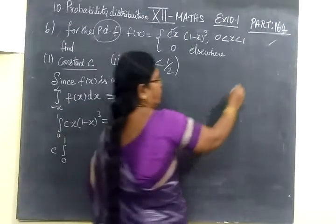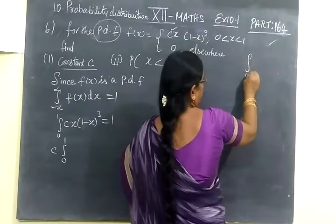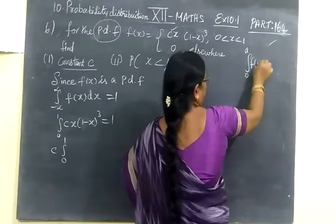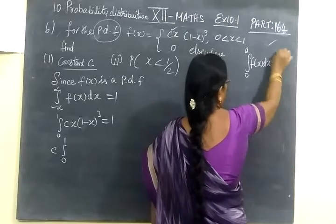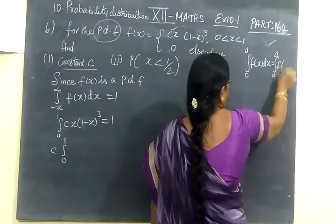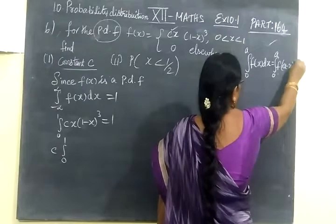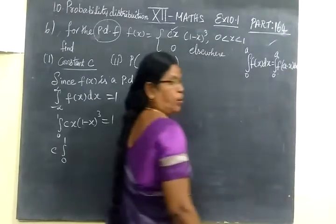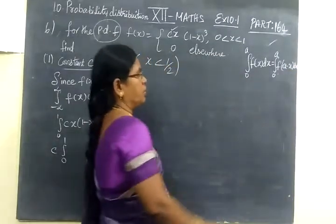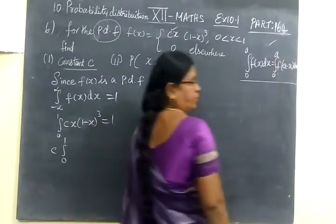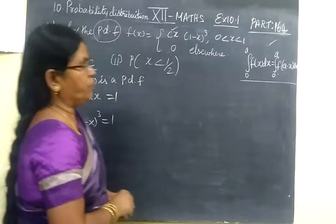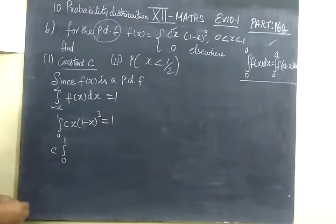And you know one property, integral 0 to a, f of x dx equals to integral 0 to a, f of a minus x dx. You have learnt some 10 properties along this. This is one property. Upper limit minus x.